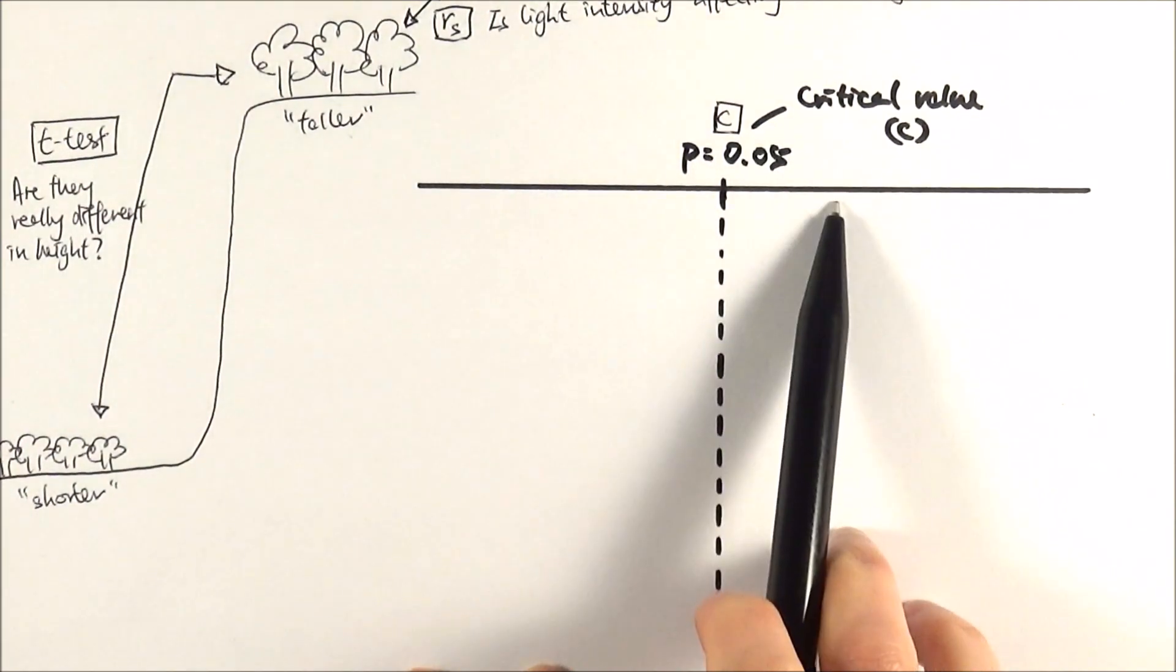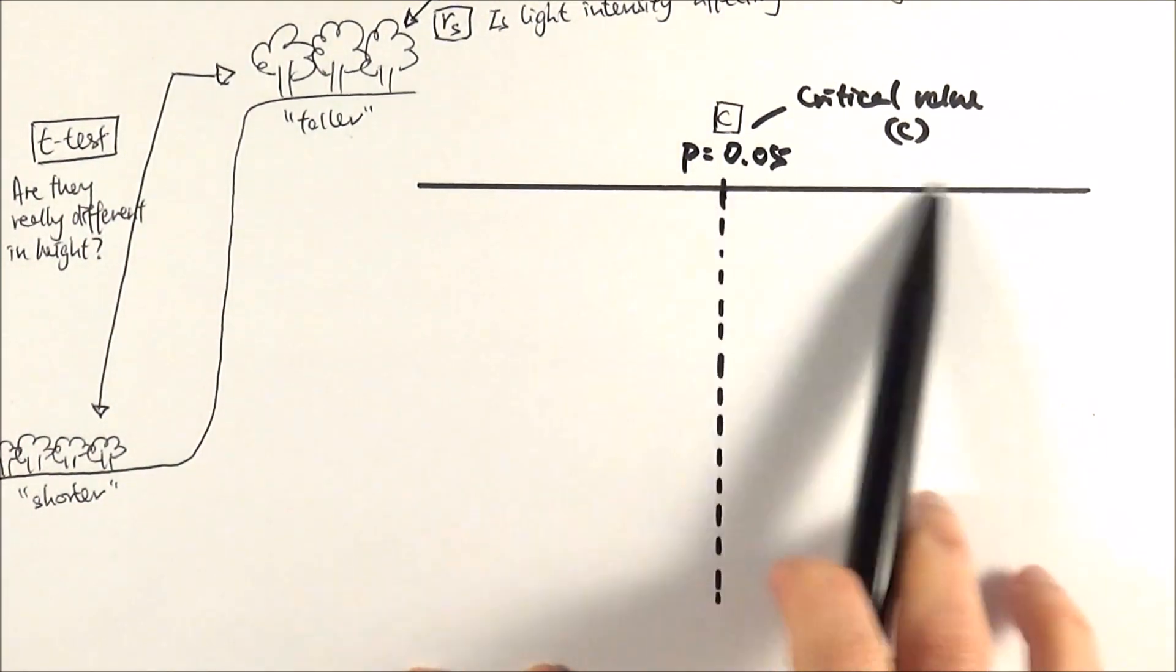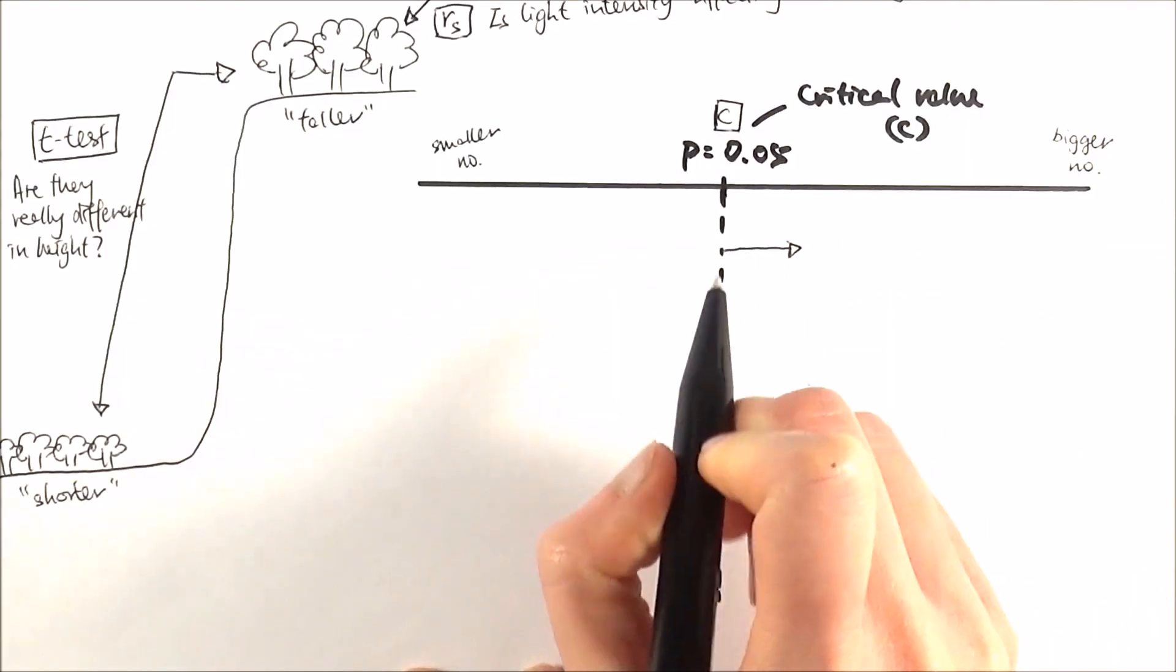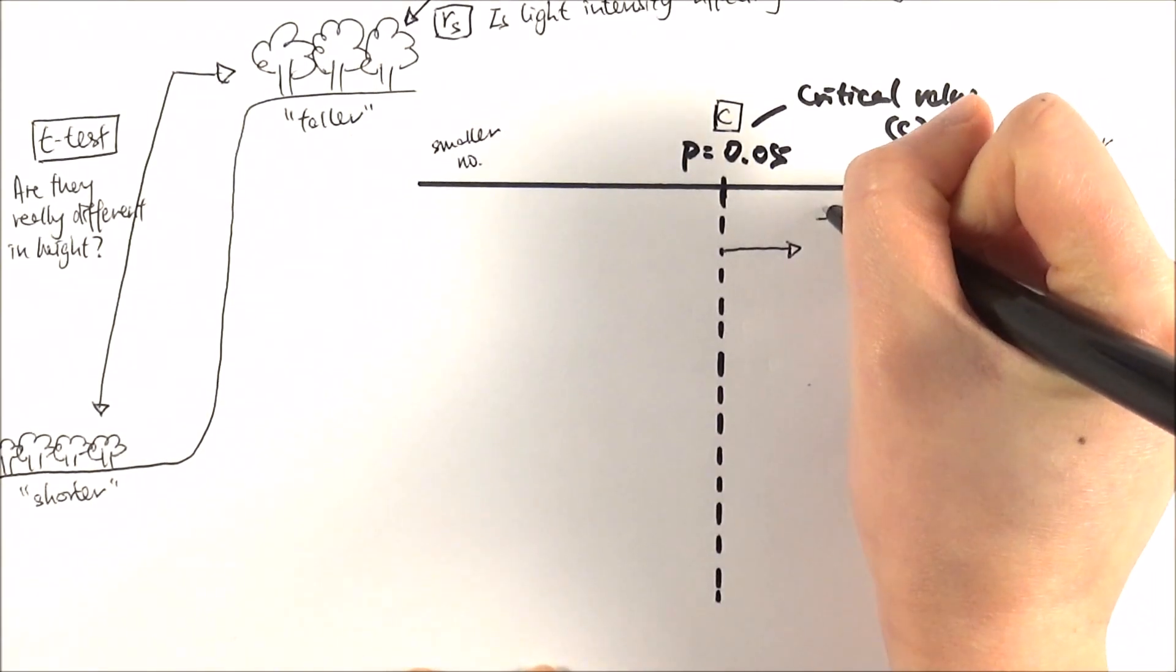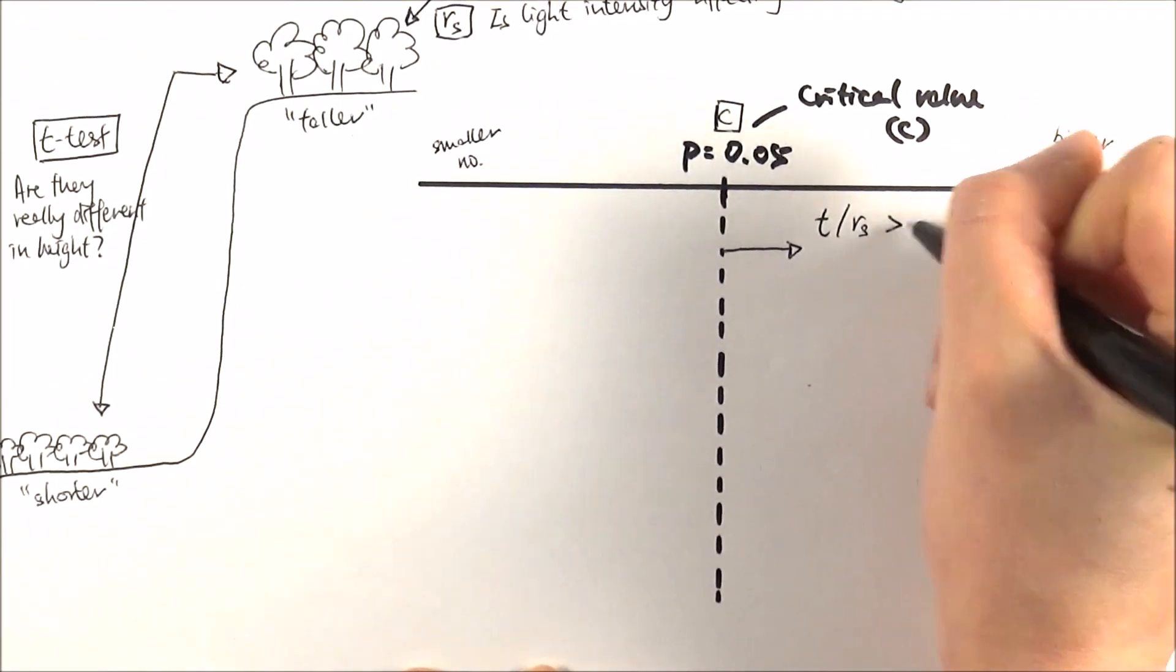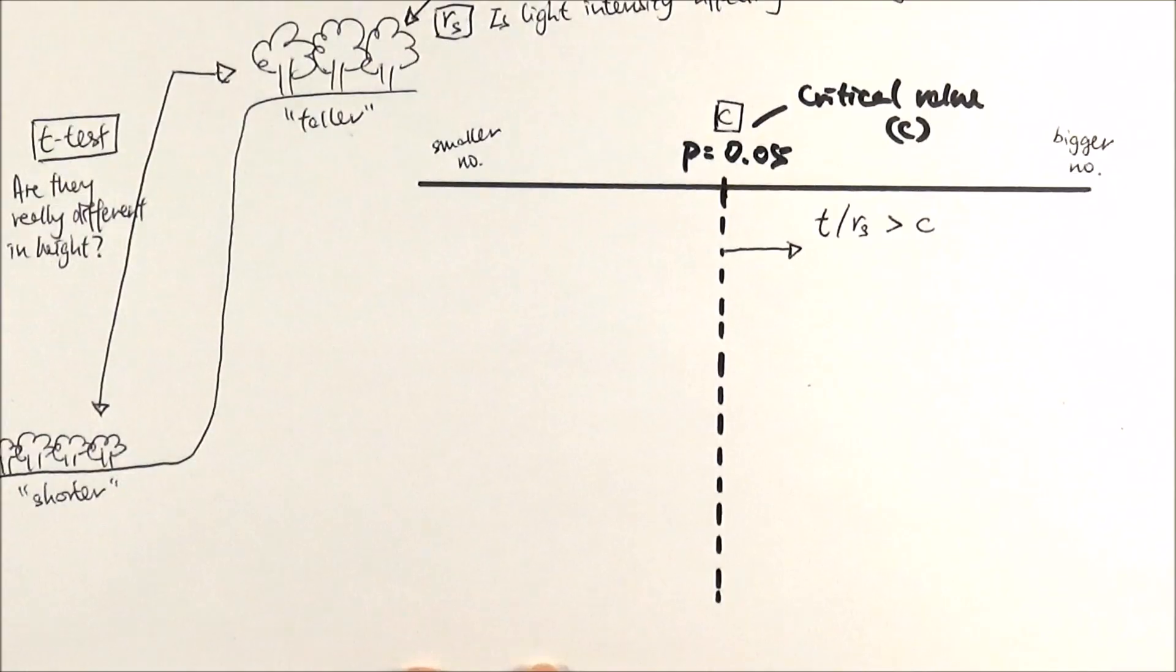If you imagine this is a timeline, meaning if you go into this side the number is going to be bigger and on this side the number is going to be smaller. Let's say if your value lies on this side, then we say the first point is my t value or my rs value is bigger than the critical value.